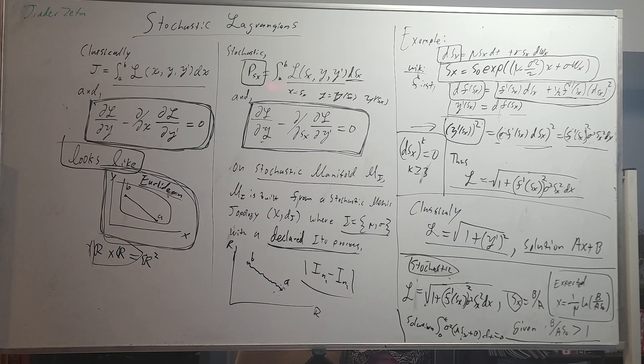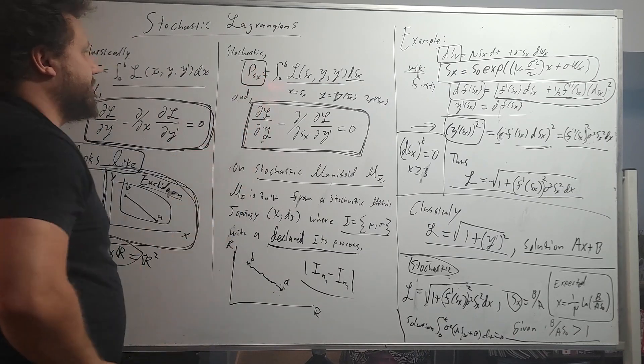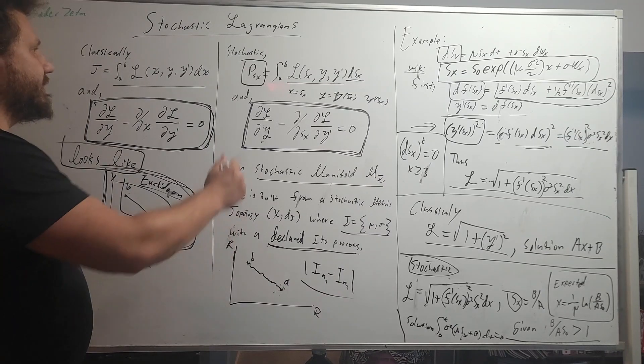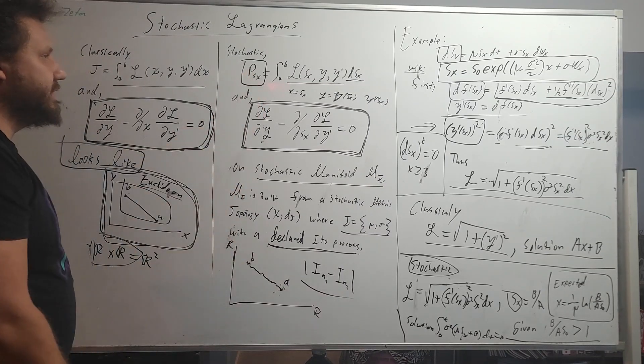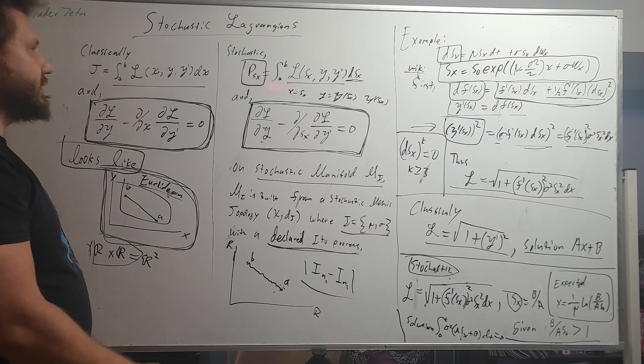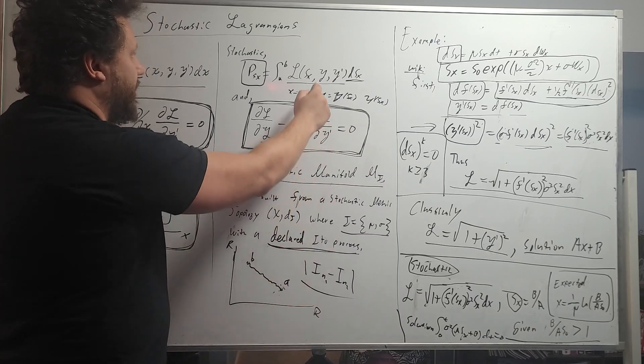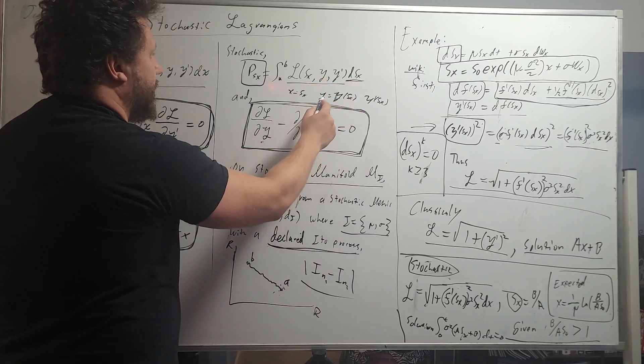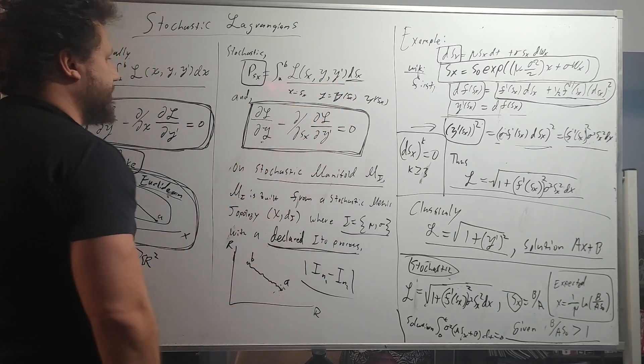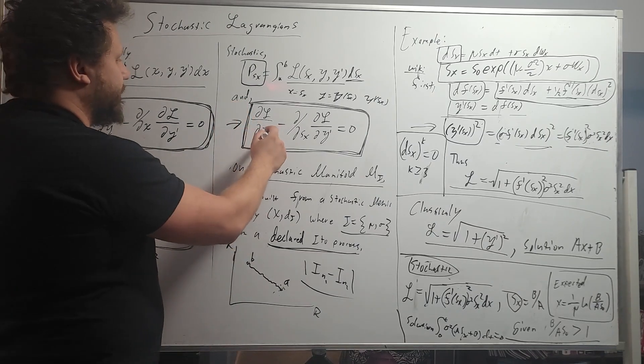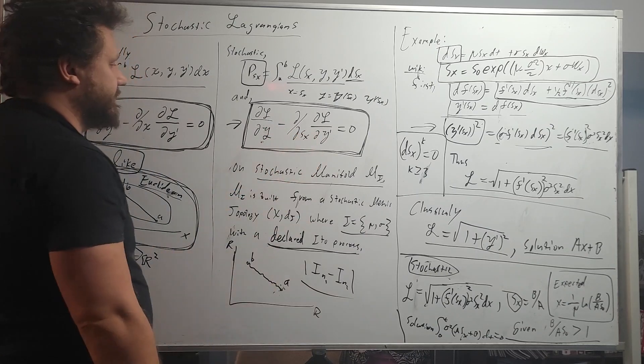So now let's ask ourselves how can we stochasticize this. If we introduce a stochastic variable s of x, a stochastic function based off the general ideal process, we have integral a to b stochastic Lagrangian. All the x's are just replaced with the stochastic process. And it's also going to obey the Euler-Lagrange equations, but just instead of x, we have sx.